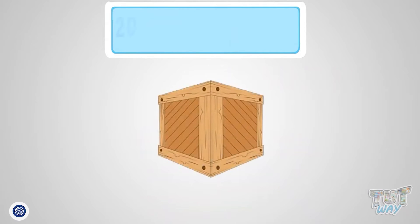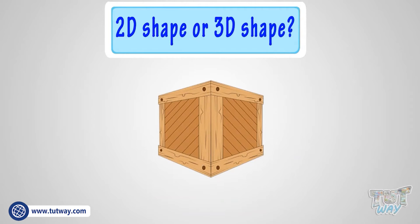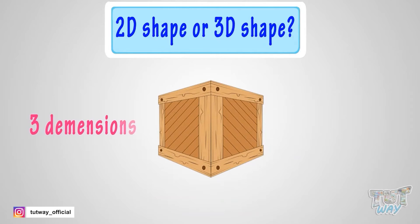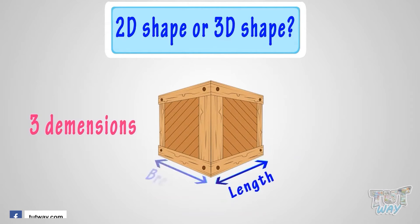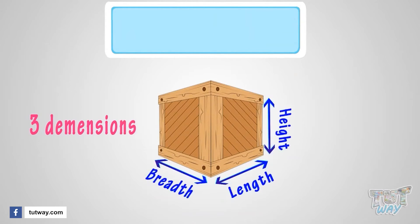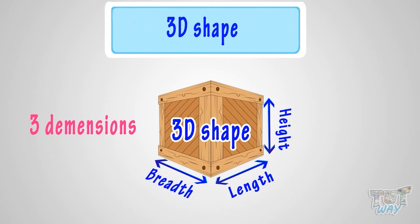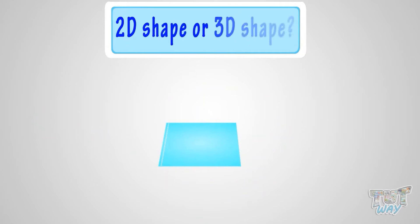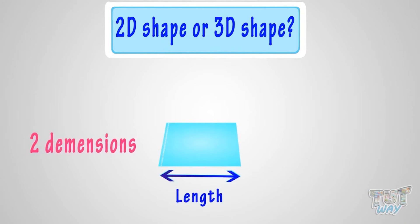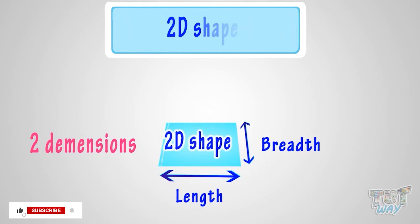Here we have a picture. Is it a 2D shape or a 3D shape? This shape has three dimensions — it has length, breadth, and height too. So, it's a 3D shape. Here we have another shape. Is it a 2D shape or a 3D shape? This shape has only two dimensions, length and breadth, no height. So, it's a 2D shape.